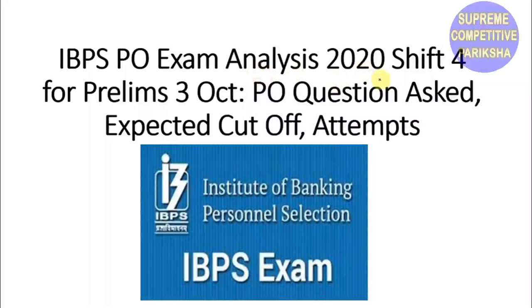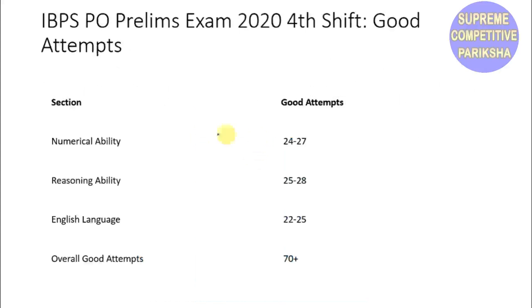Hello everyone, welcome to Supreme Computer Pariksha. Today I'm analyzing the IBPS PO Prelims Exam 2020 Shift 4. Let's quickly go through the analysis. There are three sections: Numerical Ability with good attempts of 26-27, Reasoning Ability with good attempts of 25-28, and English Language with good attempts of 22-25. The overall good attempts were 70 plus.